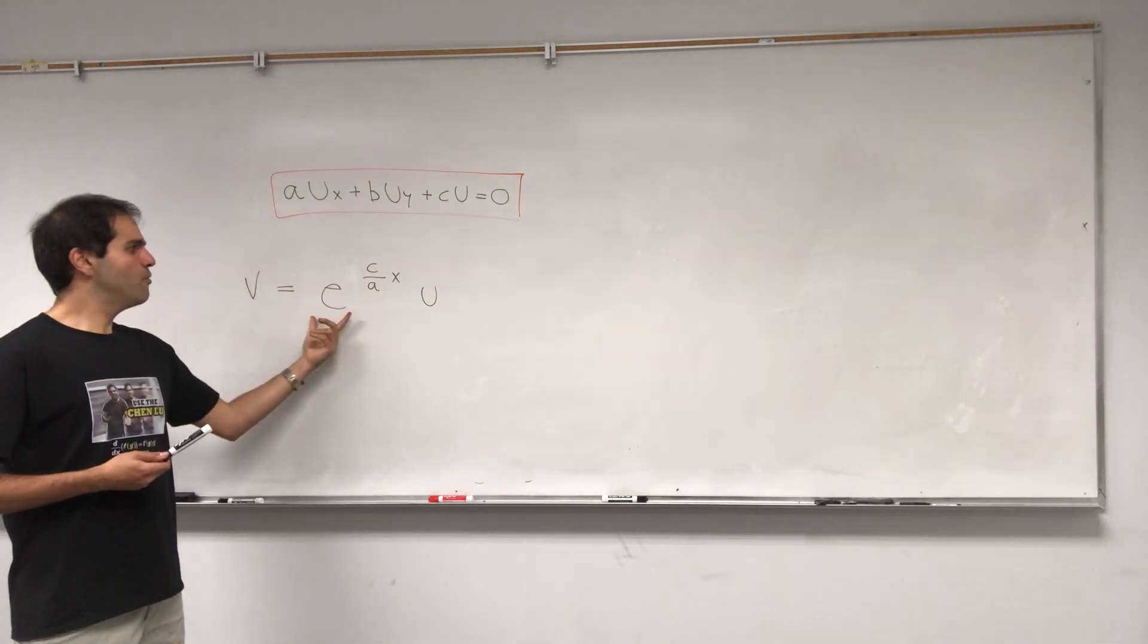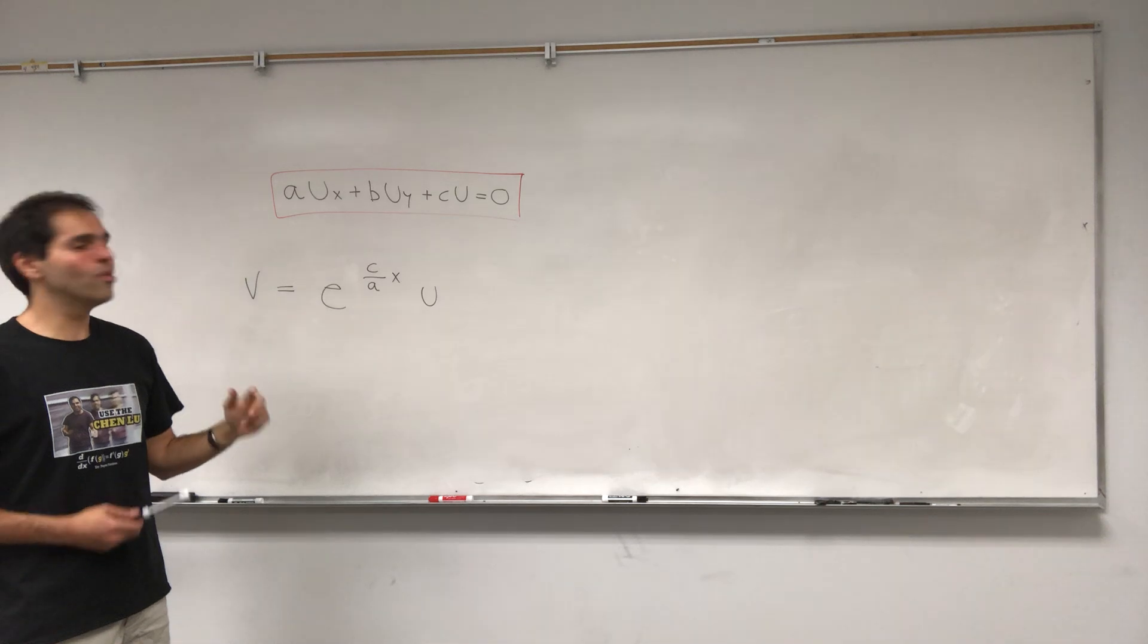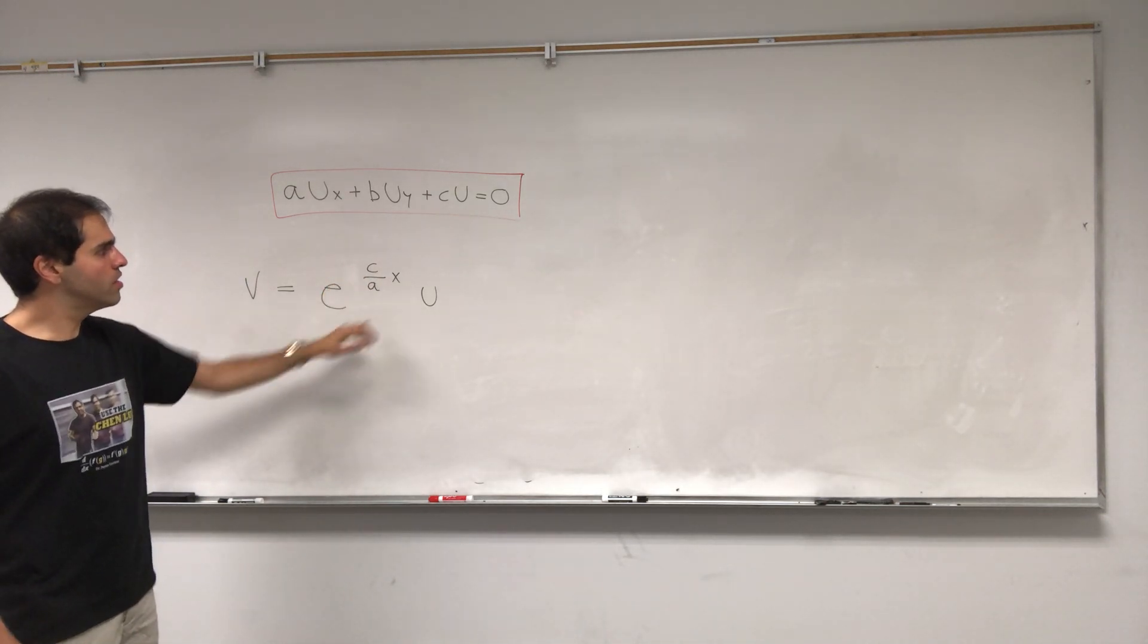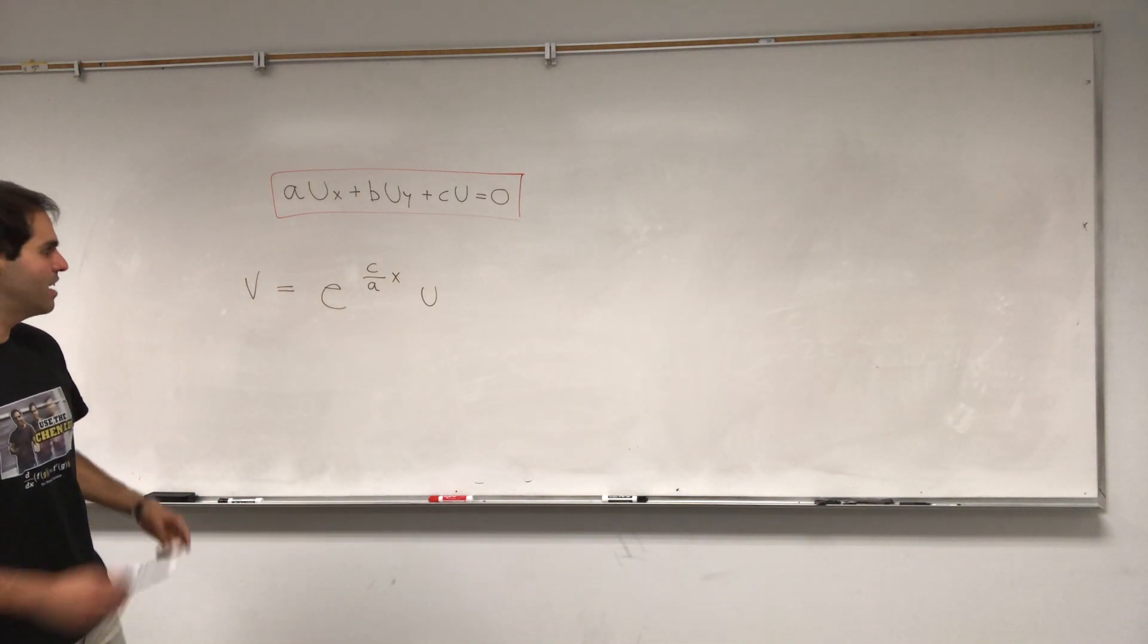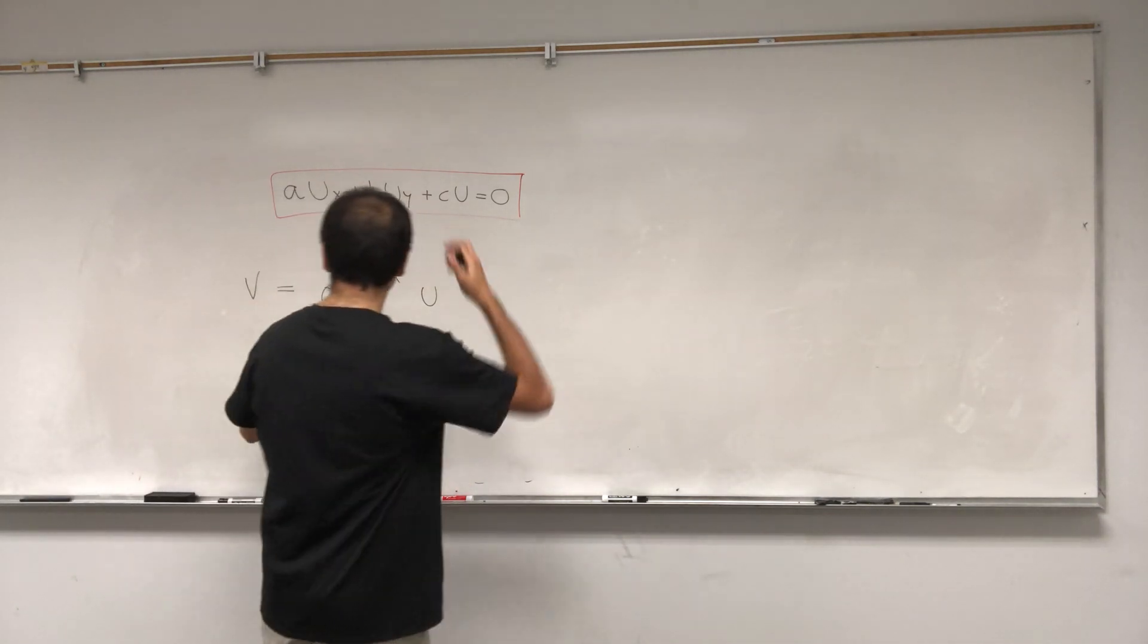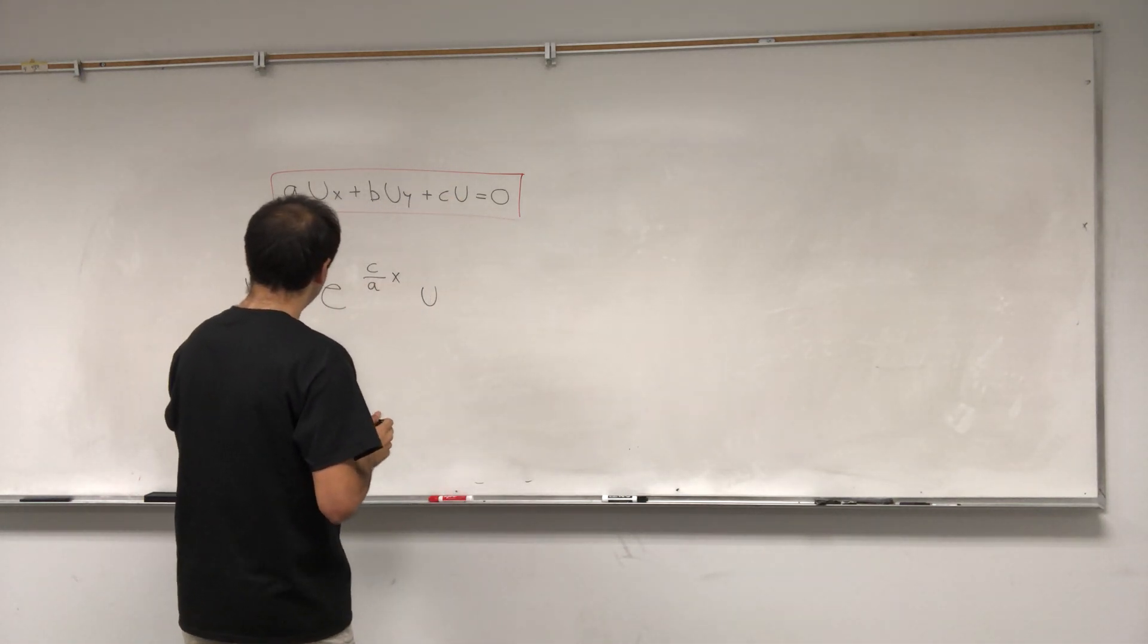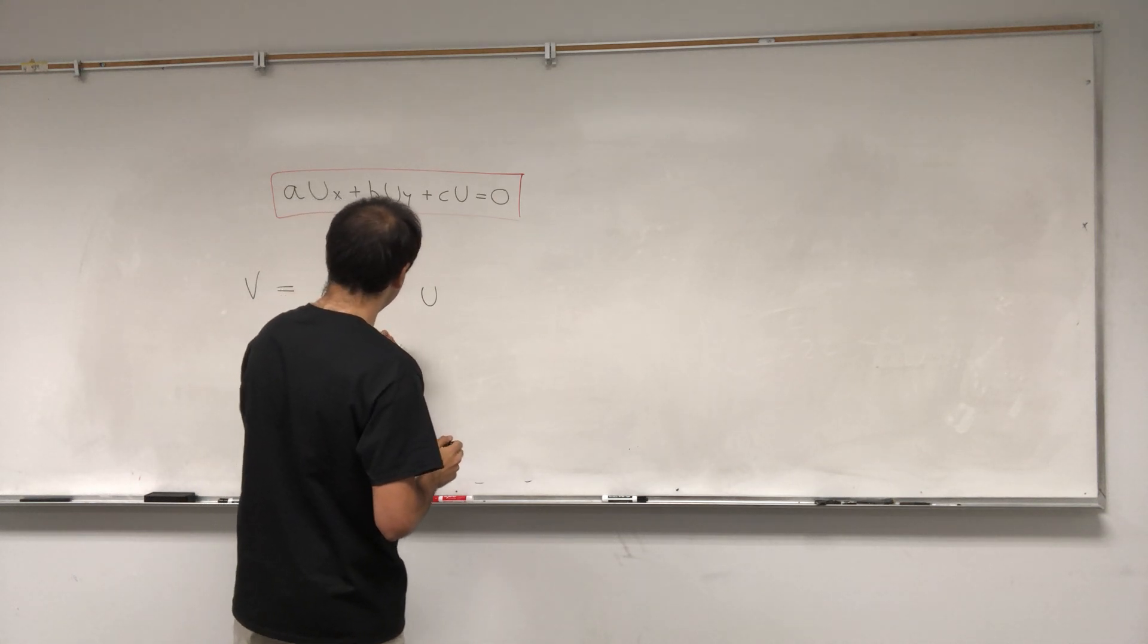And again, we kind of want to, we want to have this E because we want to use the product rule, and also I think we have this plus here because we want U to be minus that, and then we do have some cancellations. So if V is E to the C over AXU, then this becomes U is E to the minus C over AXV.